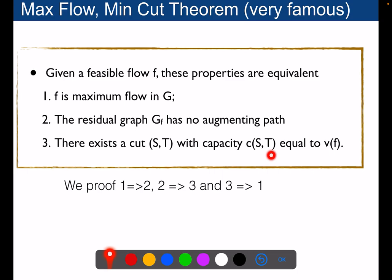How do we prove this theorem? We will prove it like this: 1 implies 2, 2 implies 3, and 3 implies 1. The first one, 1 implies 2, is quite easy. The flow is maximum in G implies that the residual graph GF has no augmenting path. We can prove that by contradiction: if the residual graph had an augmenting path, we could augment the flow and it would not have been maximum. So clearly 1 implies 2.